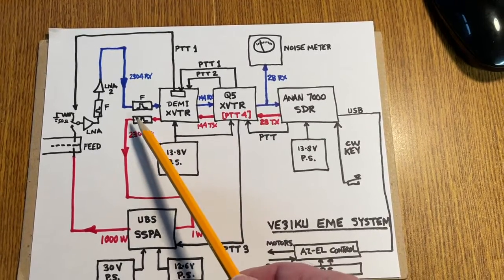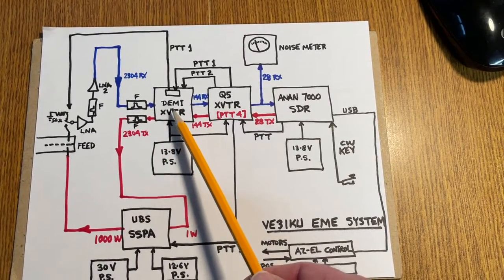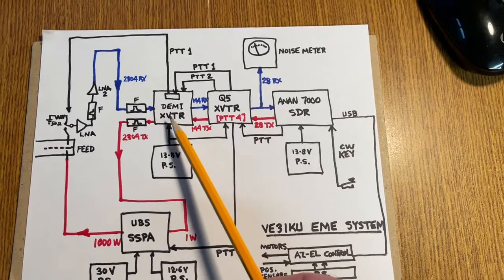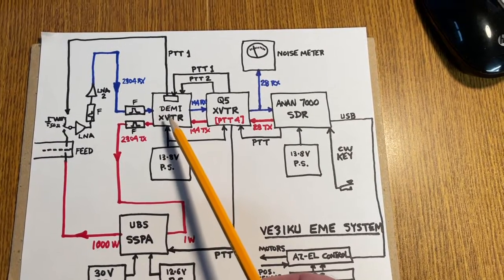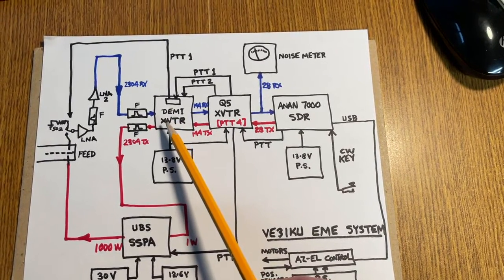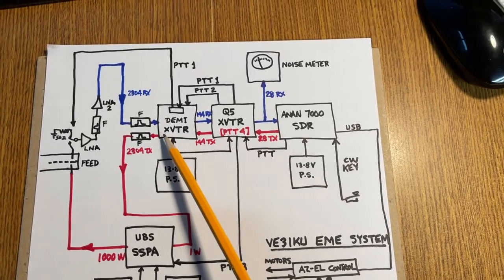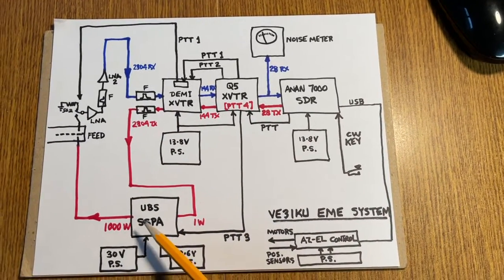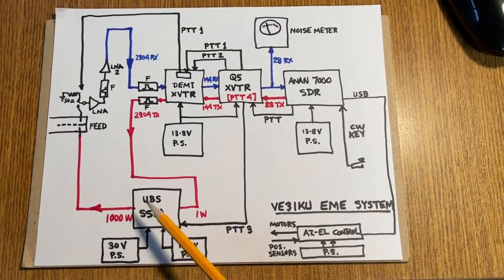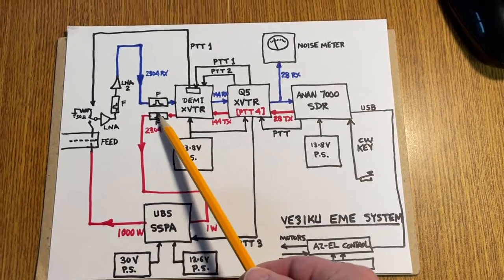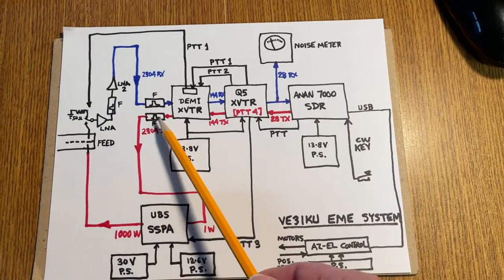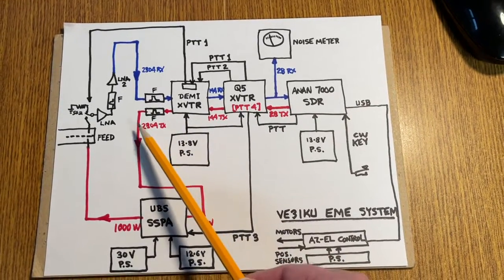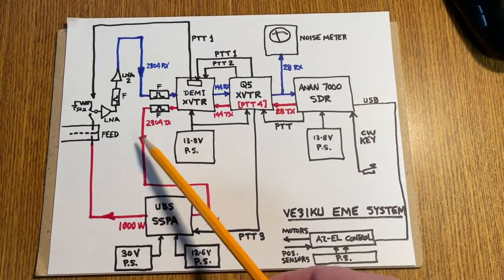There's another filter, and the reason is that the local oscillator used in the DEM transverter, which is 144 lower than 2304, is significant in strength. And because solid-state PAs are wideband devices, it would amplify that signal. We certainly don't want that. So these are again a 7-pole filter. There's no LO coming out at all after this filter, so it's pure 2304.